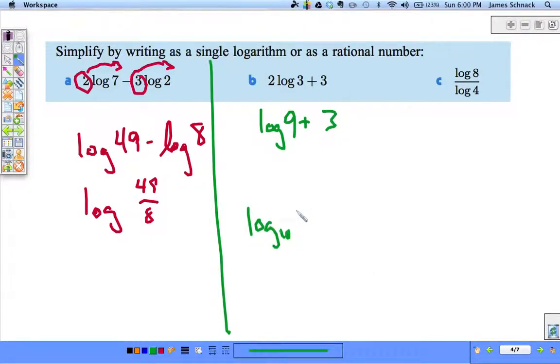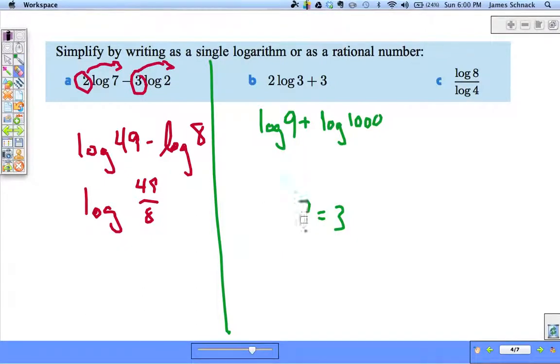So, log base 10 of what equals 3? Well, 10 to the third is 1,000. And since we're adding 2 logs, we multiply that which we are logging, log of 9,000.